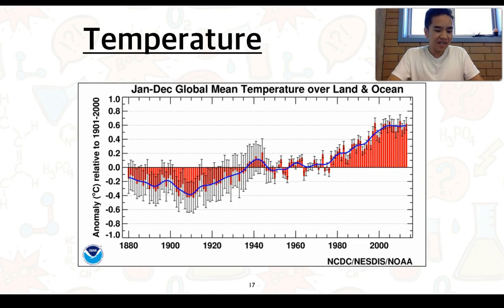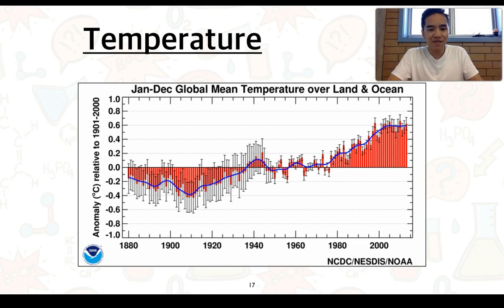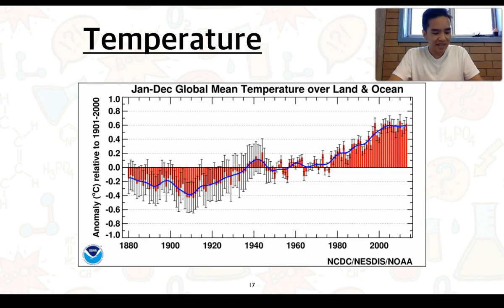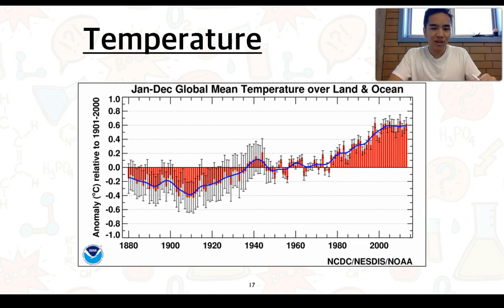With increased global temperatures, we're going to get greater evaporation of water. And since water vapour is itself a greenhouse gas, having more of it in the atmosphere increases the amount of heat retained — which will lead to further increased temperatures. We are seeing evidence of that today.